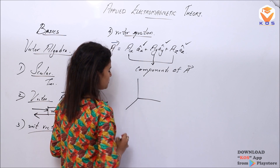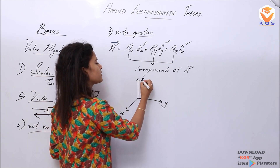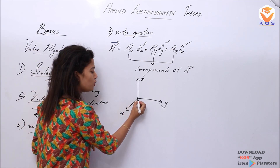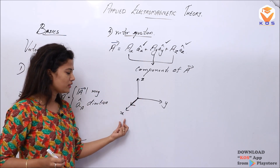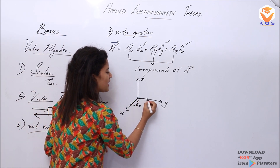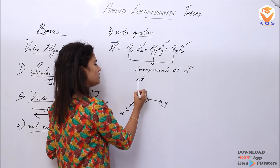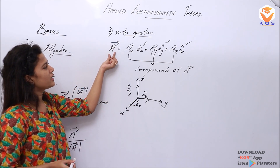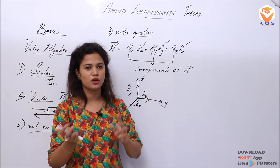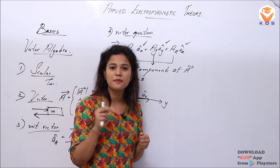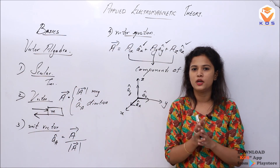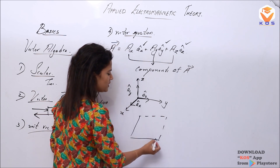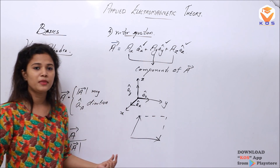So this is my axis: this is the X direction, this is the Y direction, and this is the Z direction. AŶ is directed along the Y direction and AẐ is directed along the Z direction. In this case, we have vector A resolved into 3 components. We can resolve the vector using the parallelogram method.